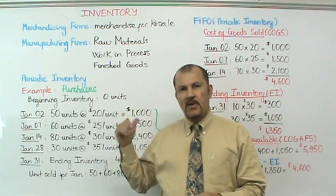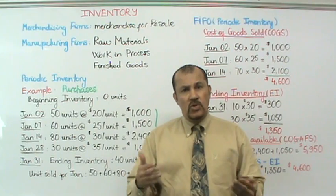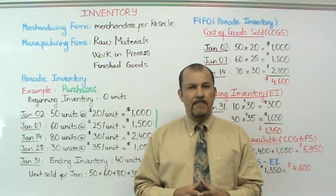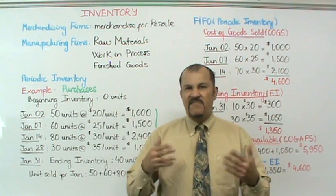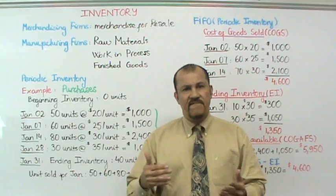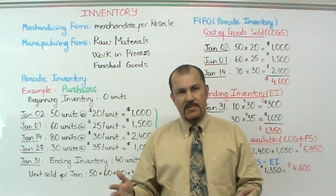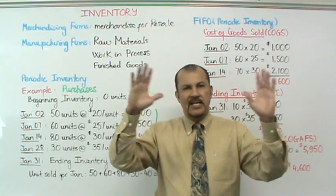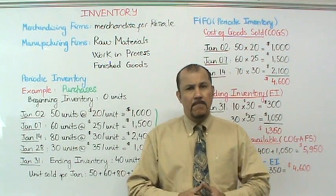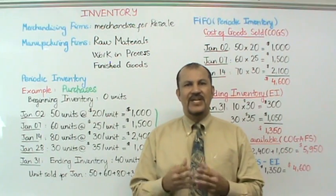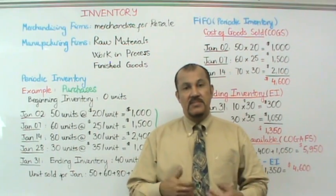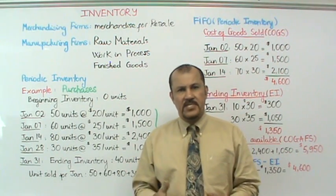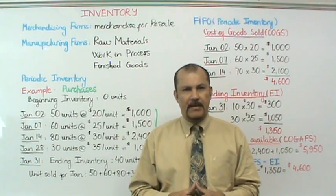Work in process inventory. Assume that at the end of the month the company had about 50 or 60 partially finished tables. If you were to hypothetically take the value of all of these partially finished tables, that would constitute the value of your work in process inventory.